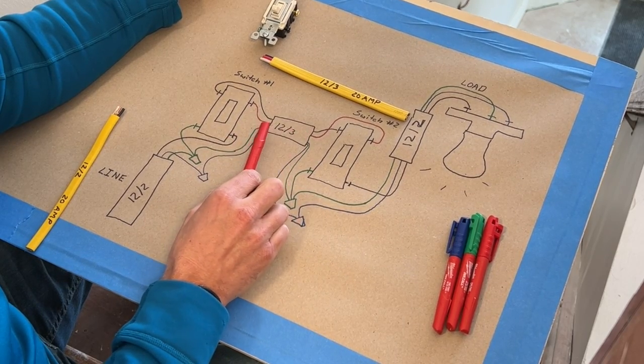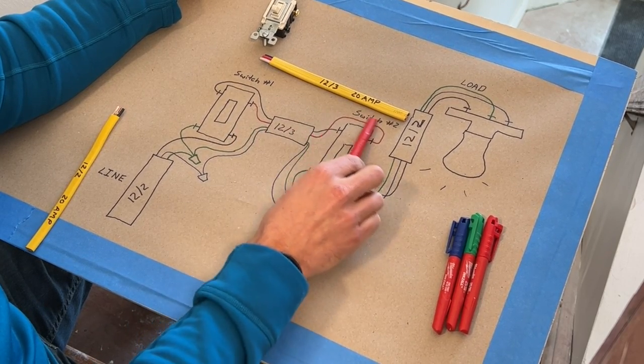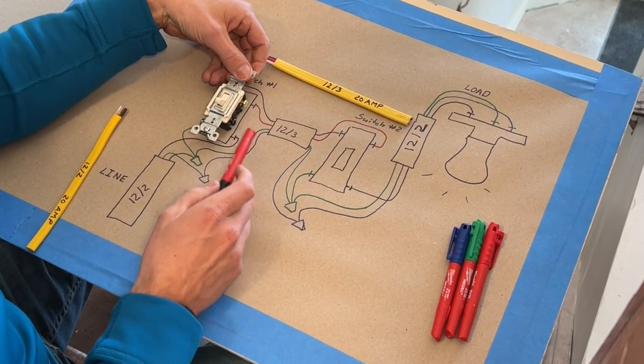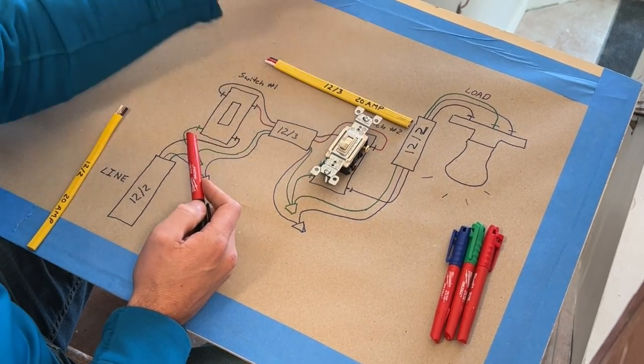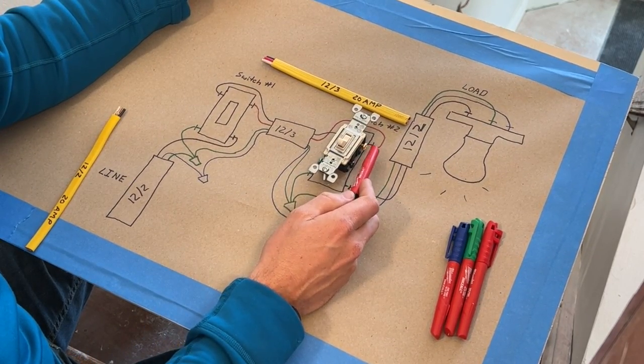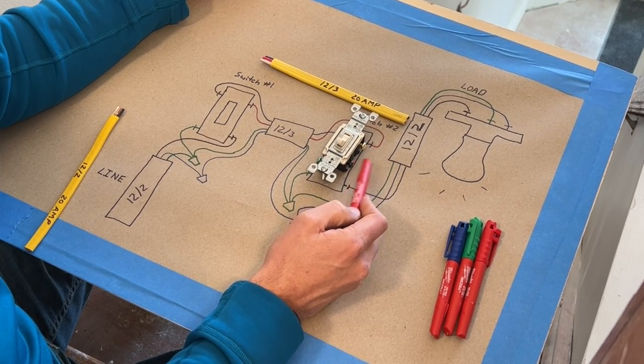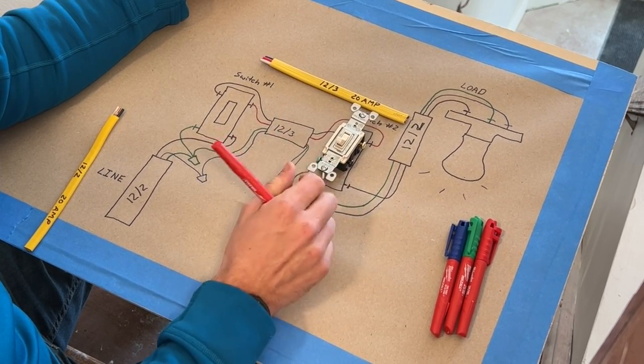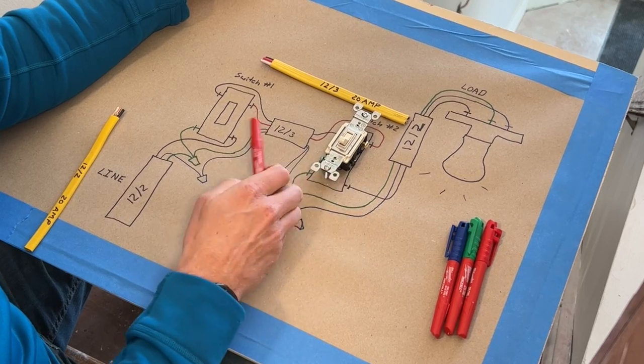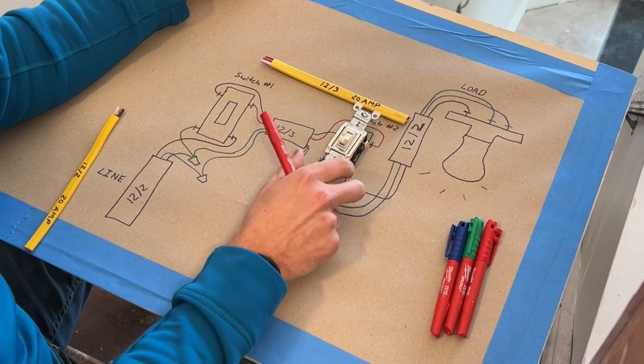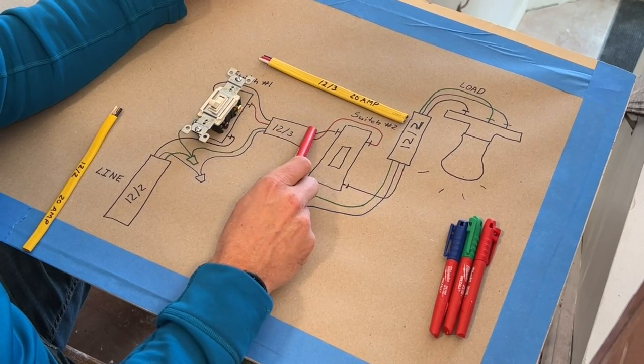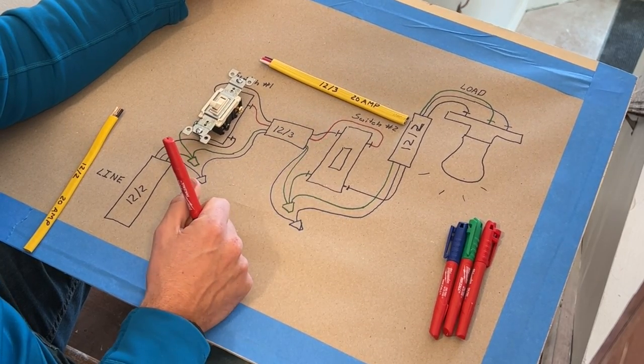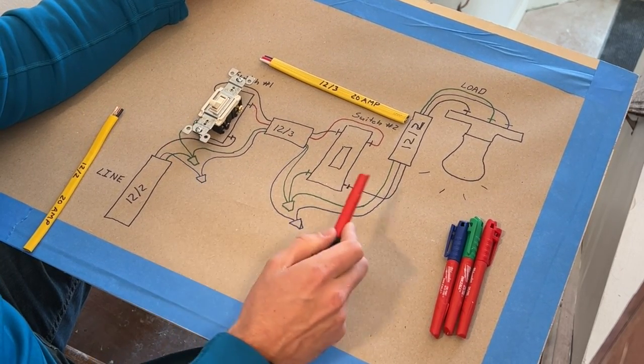Then in the same fashion, the travelers are connecting up. So in this case, I would have red coming in here. And then on the other one, I would also pass red into the same side as the black common. Now that is not critical - it should work if you took red to this side, but I just like to be consistent. And as such, I took the black to my top traveler terminal.